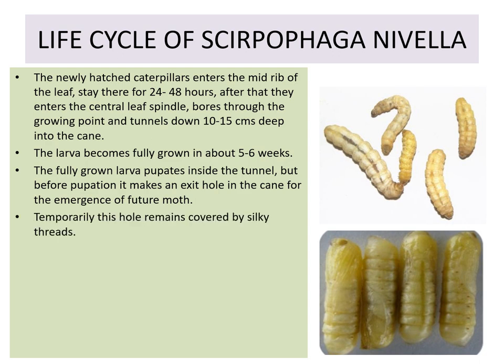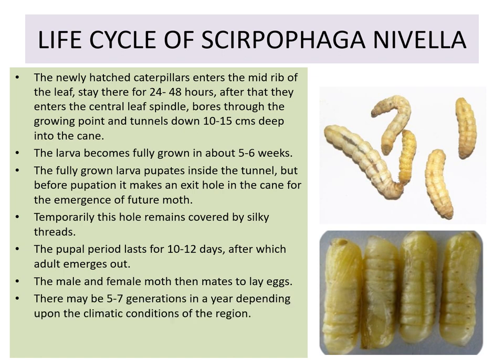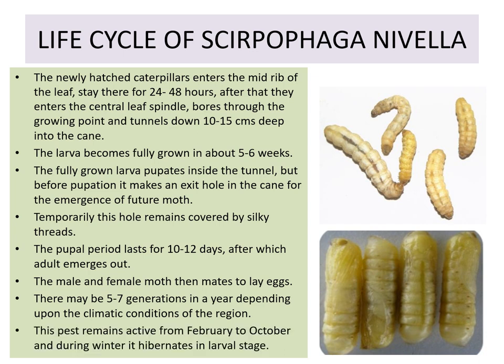The fully grown larva pupates inside the tunnel, but before pupation it makes an exit hole in the cane for the emergence of the future moth — this is very important. This hole temporarily remains covered by silky threads. The pupal period lasts 10 to 12 days, after which the adult emerges and the male and female moth mate to lay eggs.